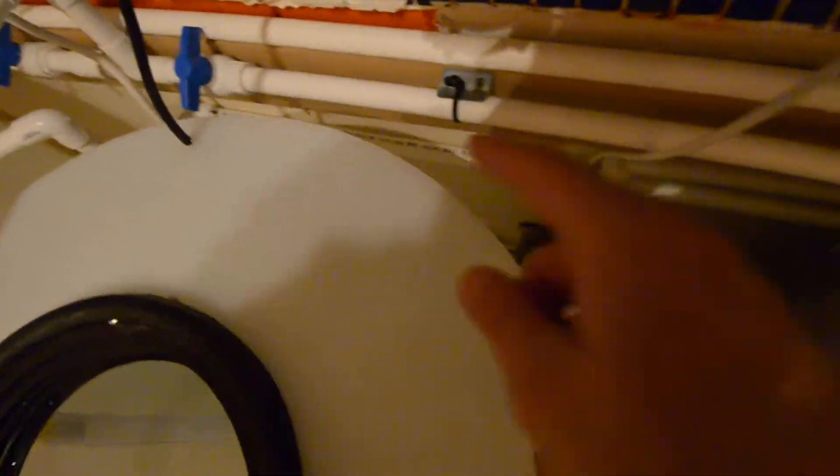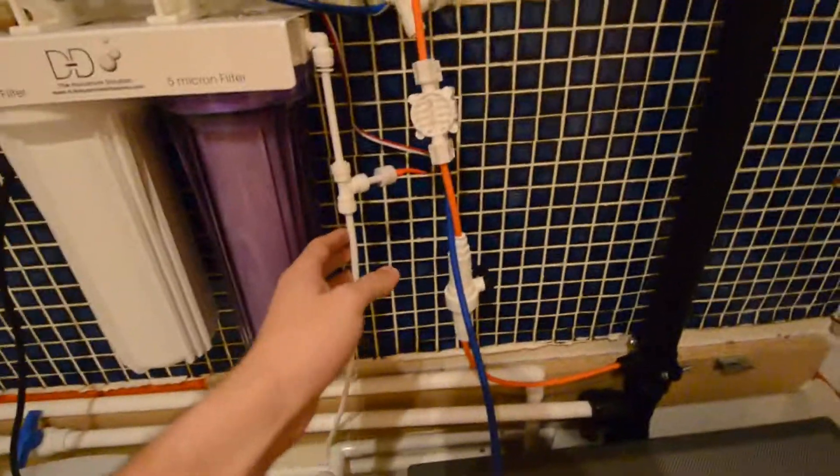So basically, just to show you what I've done here, I don't know whether you can see down the back there but there's basically a valve with a normal little tap connector about there, and that feeds into the RO unit here.